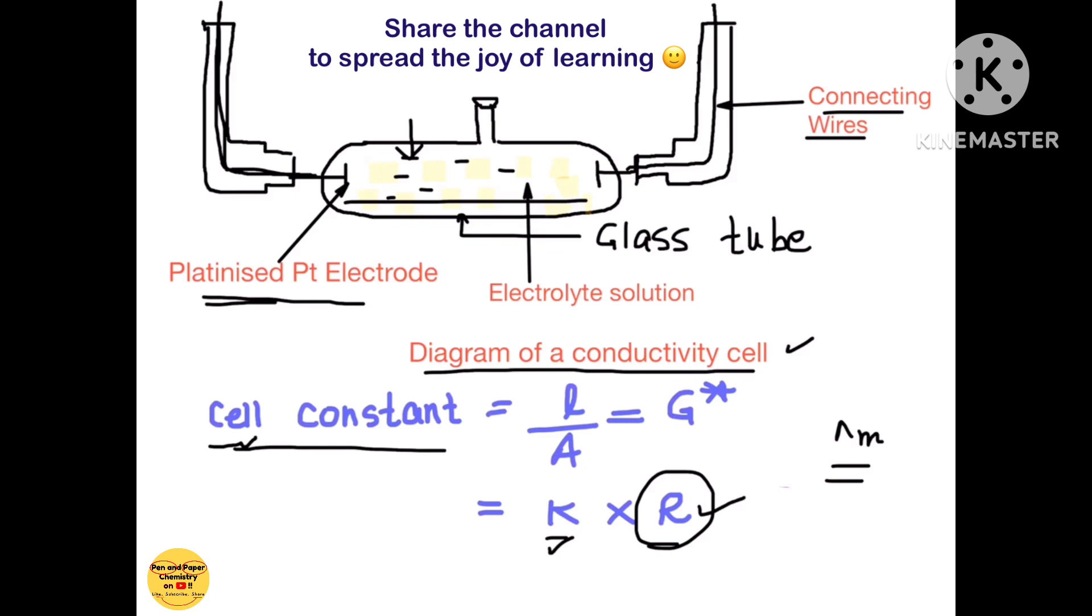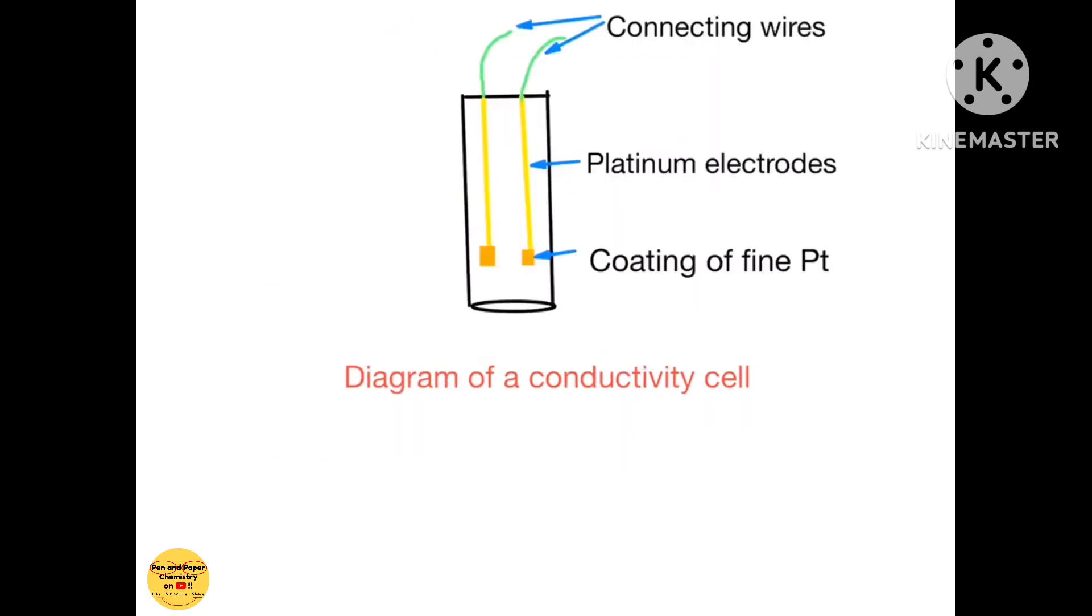Conductivity cells are of different shapes. This is one of the diagrams. There is another one. This is another simplified view of a conductivity cell and in fact if you see originally when you actually practically use it, it is a very small device which looks just like a small thermometer.